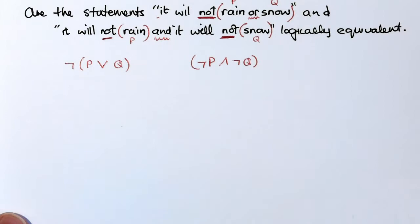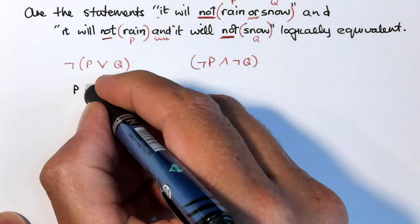So not P or Q and not P and not Q, are these logically equivalent statements? Well, let's investigate. Let's go to our truth table. There's two possibilities, P and Q. So we set up our truth table.